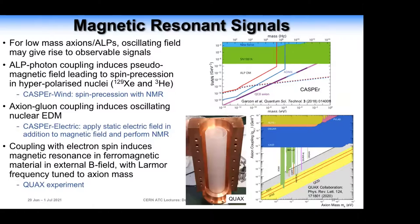At low masses, looking for these time-dependent signals, you can also use magnetic resonance. Experiments like CASPER Wind look for spin precession in hyperpolarized nuclei — Xenon-129 and Helium-3 — with nuclear magnetic resonance techniques, coming from this oscillating axion field. There's also the possibility of using the axion-gluon coupling, which gives an oscillating nuclear electric dipole moment — that's CASPER Electric. Another proposal involves the coupling with the electron spin inducing magnetic resonance in a ferromagnetic material in an external B field, looking for Larmor precession — that's the QUAX experiment.